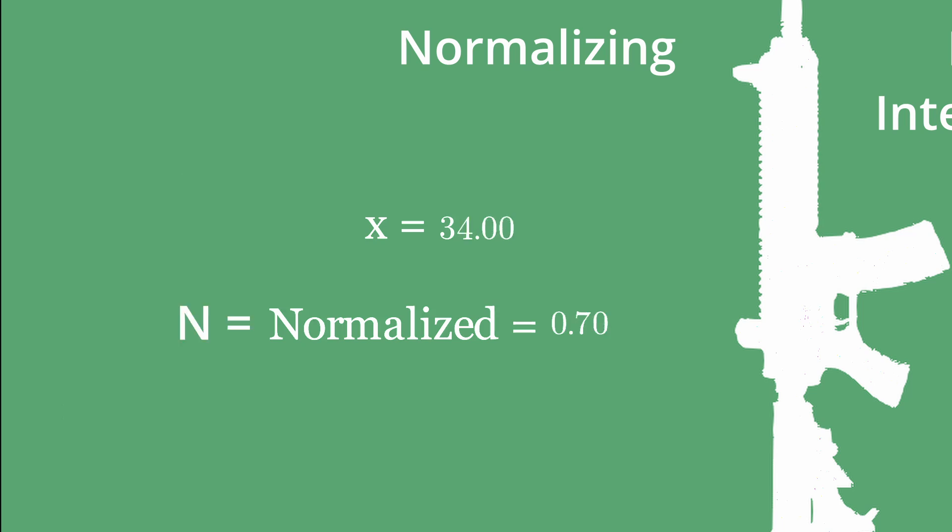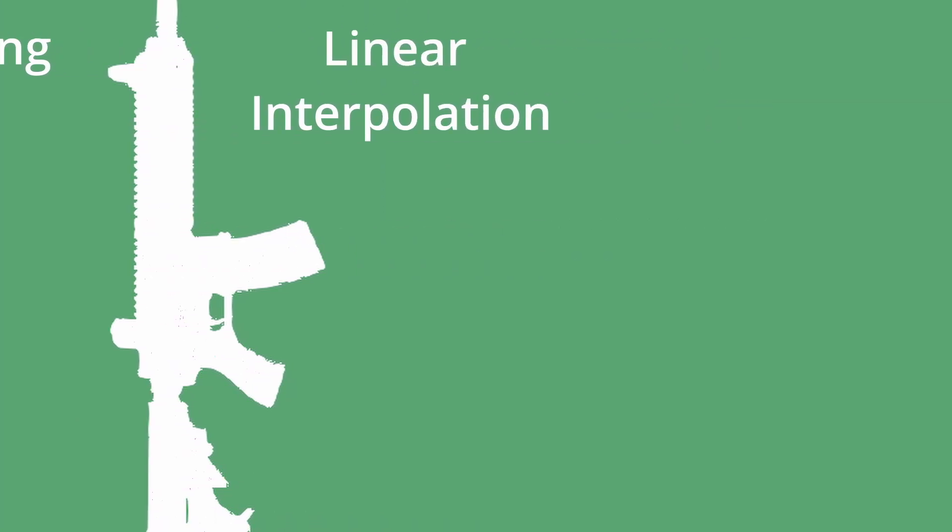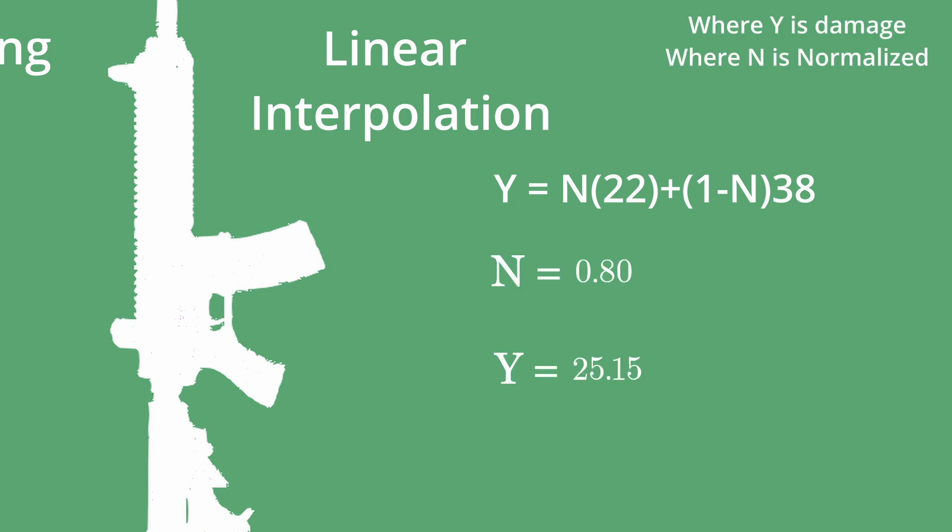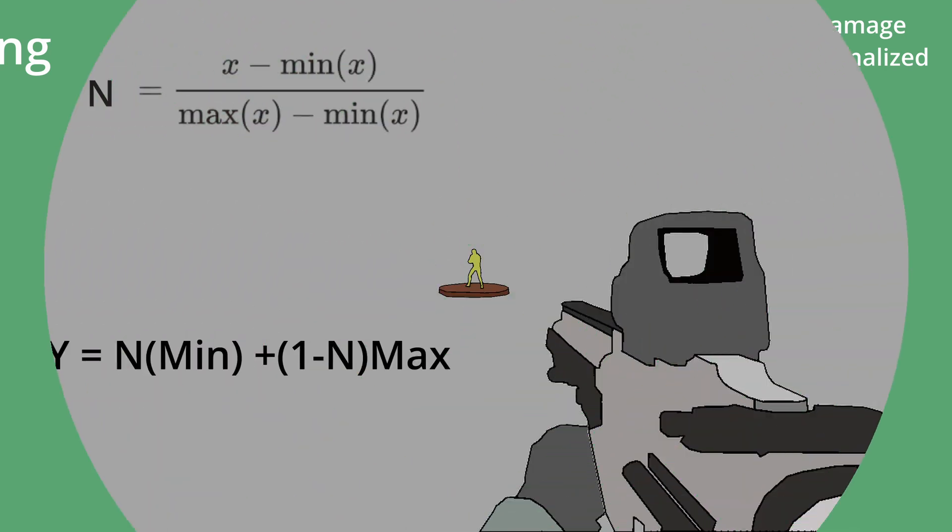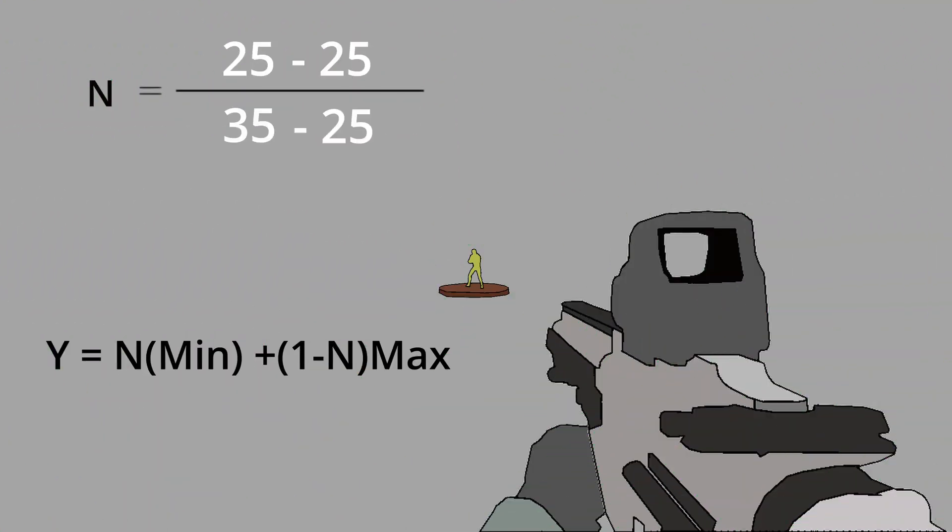After we get our normalized value, let's call this n, n will always be between 0 and 1. If the equation generates a value below 0, we'll just set the value to 0. And if the equation generates a value above 1, we'll just set the value to 1. We can now use the equation on screen to get the damage from this normalized value. We put the min damage here and the max damage there.